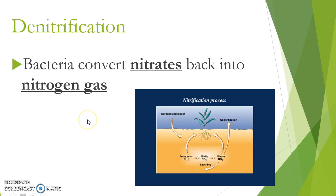How do we get the nitrogen back into the atmosphere? Because it's a cycle, we use a process called denitrification. When you go to the bathroom, you produce nitrates in your urine and things like ammonia. Bacteria break down those nitrates and that nitrogen back into nitrogen gas, which is then released back into the atmosphere, completing the process of the nitrogen cycle.